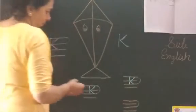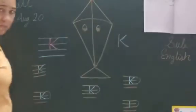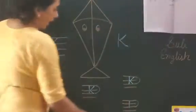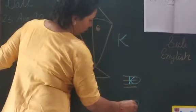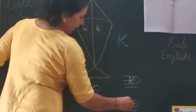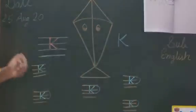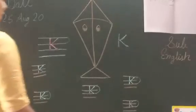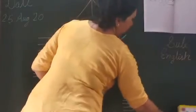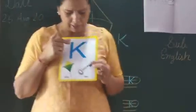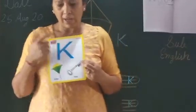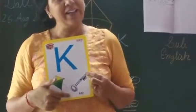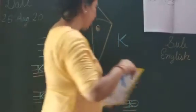Let's see one more time. First we draw one standing line, then two dots, then one slanting line, and again another slanting line — that makes letter K. K for kite. Which picture is this? K for kite. And K for ki — Chavi. K for ki also.